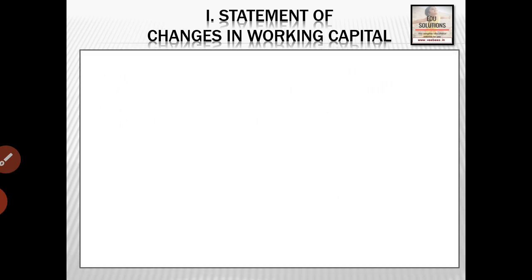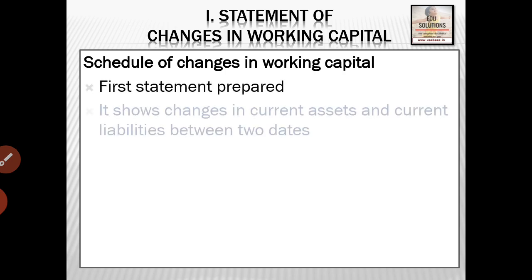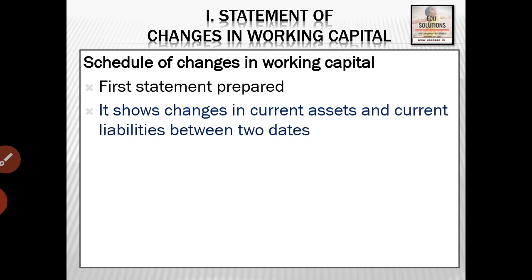Now let us discuss the first statement — the first schedule — that is, the statement of changes in working capital, also called the schedule of changes in working capital. It is a statement prepared that shows changes in current assets and current liabilities between two dates — between two balance sheet dates. In other words, this statement shows only current assets and current liabilities.